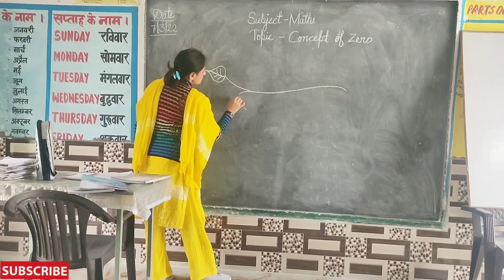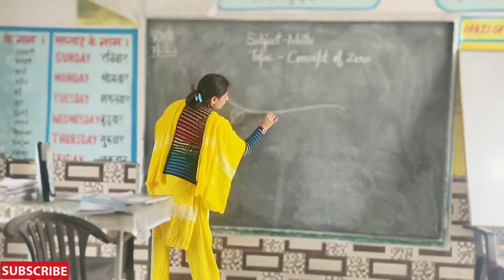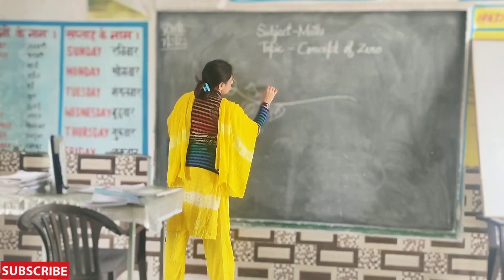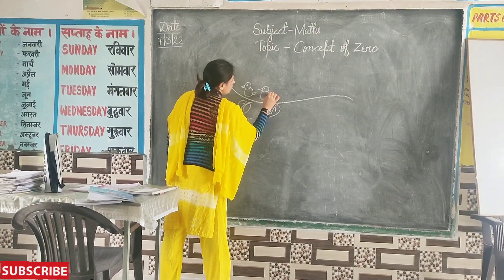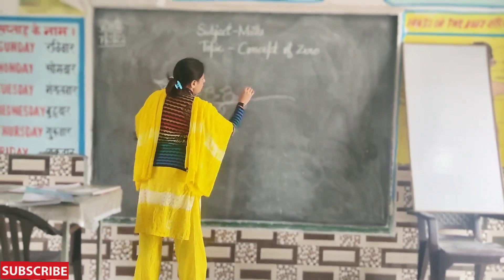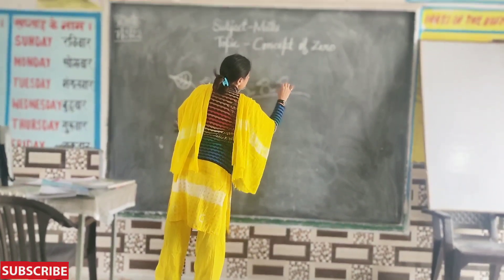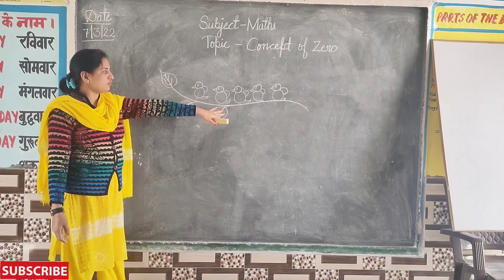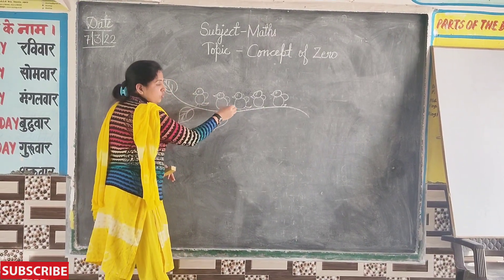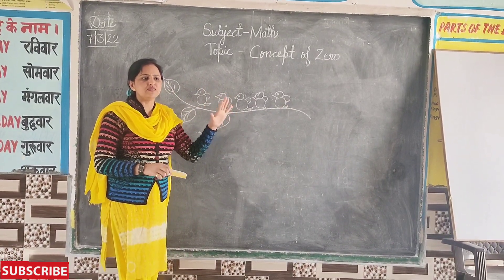Everybody look here. What is this? A branch. Everybody look at the blackboard. How many birds are sitting on this branch? One, two, three, four, five. Five birds are sitting on the branch.